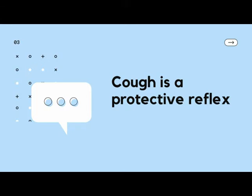The cough reflex is a physiological mechanism — it is a protective reflex initiated by the irritation of the bronchial mucosa, causing bronchoconstriction, which is the narrowing of the airway passages. This in turn stimulates cough receptors. It is a very useful physiological mechanism that serves to clear the respiratory passages of any foreign material and excessive secretions. It is a complex reflex mechanism involving the central and peripheral nervous system as well as the smooth muscles of the bronchial tree.